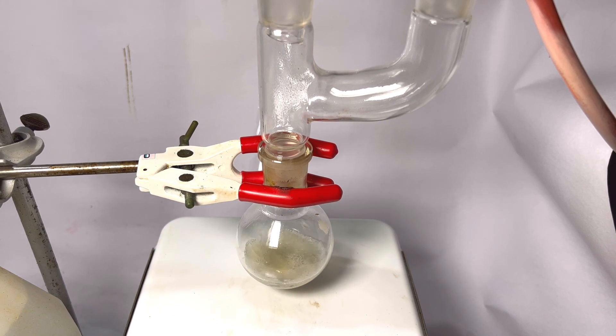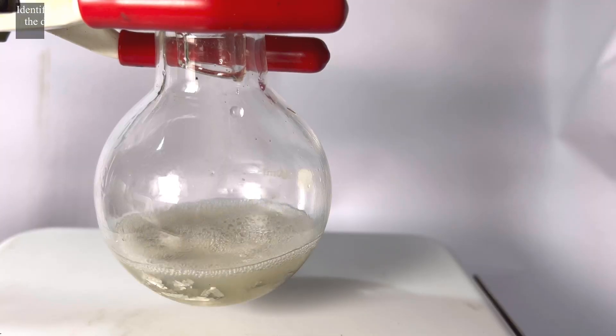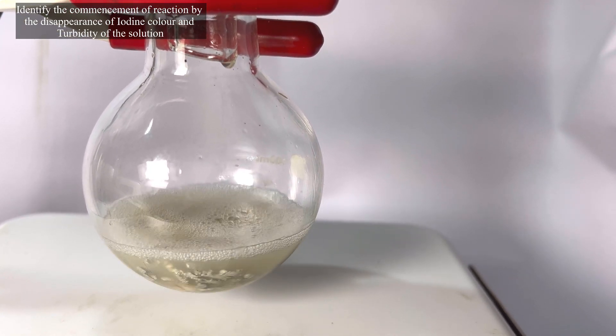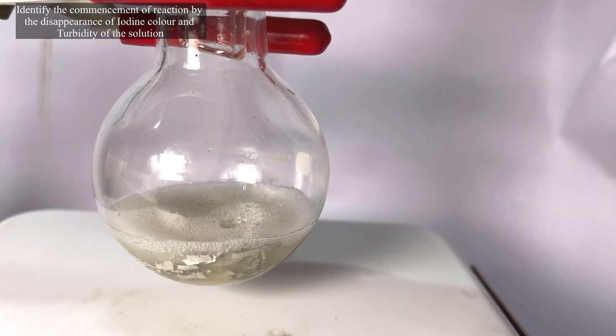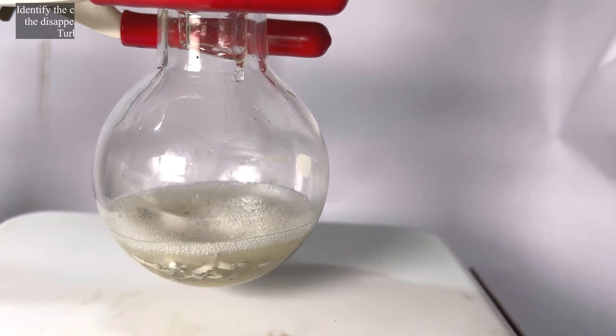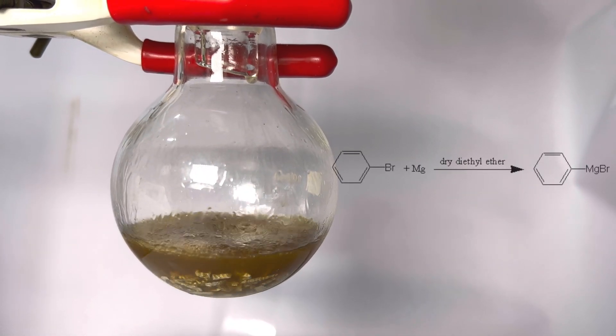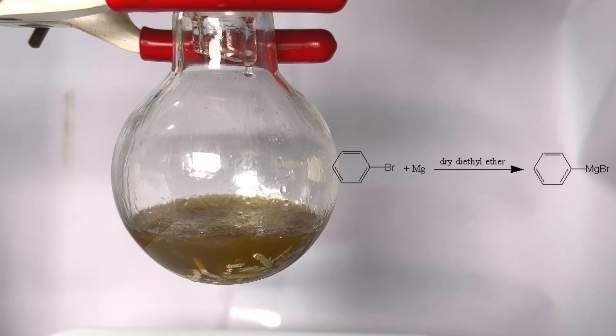In our case, a gentle heating was applied and when the reaction started to commence we stopped heating as this is an exothermic reaction and the heat of the reaction itself can carry the reaction forward. You can see that the reaction has commenced by the disappearance of the color of the iodine and appearance of turbidity. You can also see the magnesium turnings getting slowly reduced as it goes into the solution. What's happening here is the formation of phenylmagnesium bromide which is our Grignard reagent.